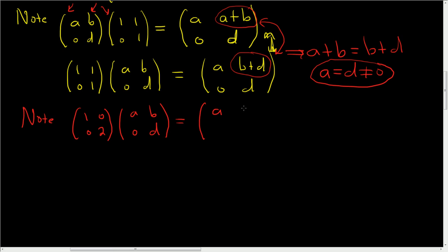We get (a, b; 0, 2d). Let's see: 1 times a is a, 0 times 0 is 0, and then 1 times b is b. Yep, looks okay. And then 0 times d is 0, so it looks okay. And then here we get 0, and then here we get 2d. So far so good. Let's go the other way.